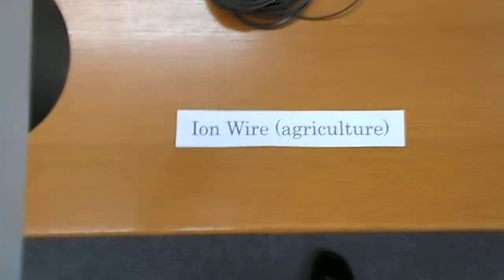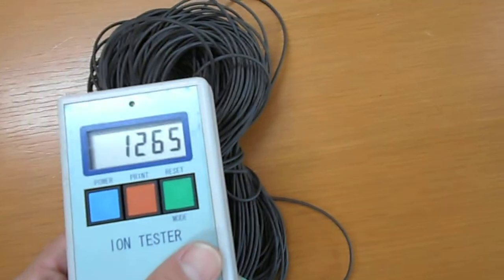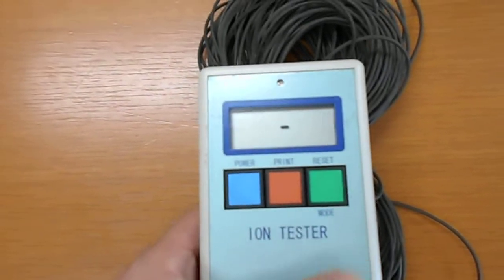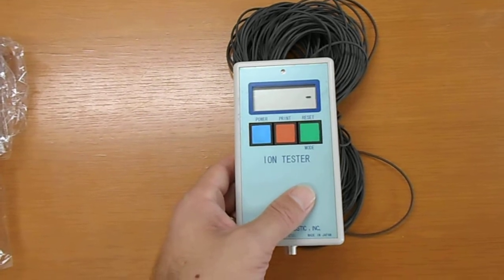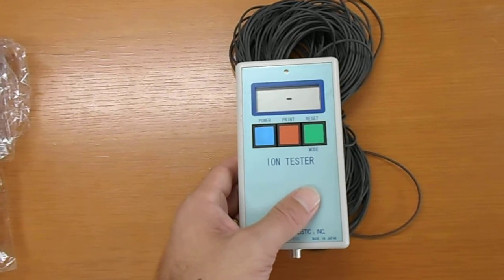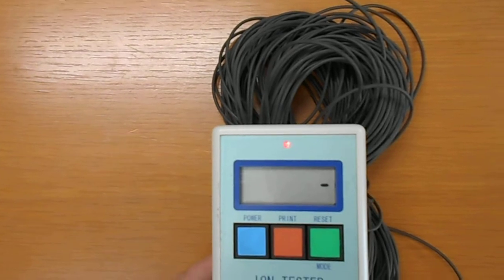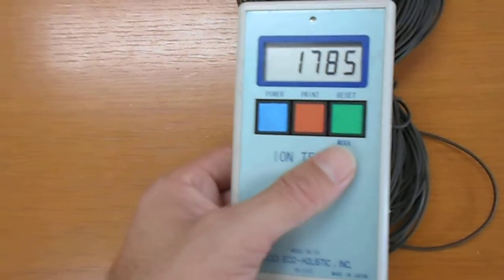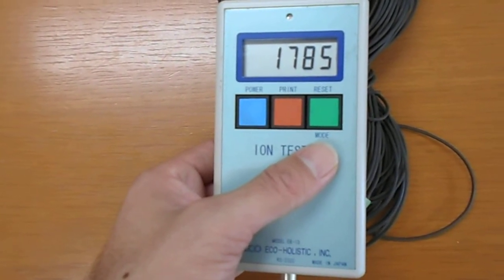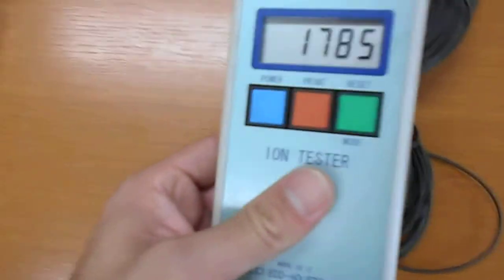Next, this is the iron wire we use for agriculture mainly and fisheries, to promote the growth of products. Reset. You can hear the emission of ions. This is set quite high at one thousand seven hundred and eighty five. We set this high on purpose, higher than the dedica chips, because this is for plants and fish.